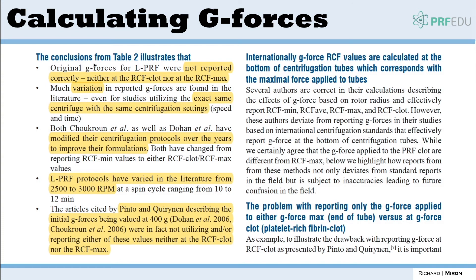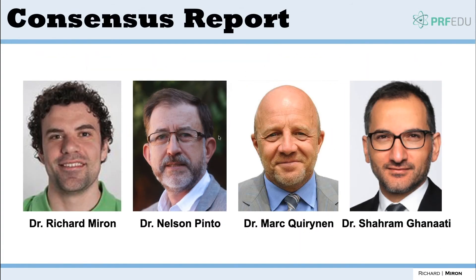All of this shows there's been a lot of confusion in the field. The original g-forces for L-PRF were not reported correctly — neither at the RCF clot nor the RCF max — and there was much variation in the protocols utilized, with RPM values ranging between 2500 and 3000. Some colleagues were describing the initial g-forces as 400g calculated at the RCF max, when they were actually reported at the RCF min.